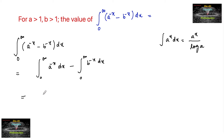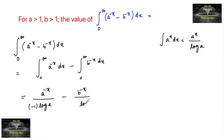Since the integration of a to the power of x dx equals a to the power x upon log a, we apply that here. For a to the power of minus x, the coefficient of x is negative 1, so we divide by minus 1. Similarly for b to the power of minus x upon log b, the coefficient of x is negative, so we take minus 1. Applying the limits 0 to infinity.